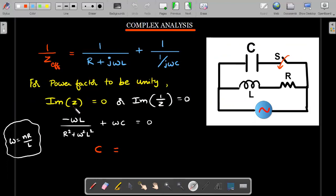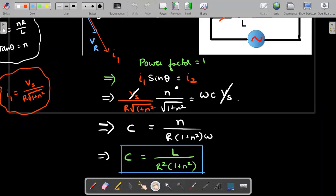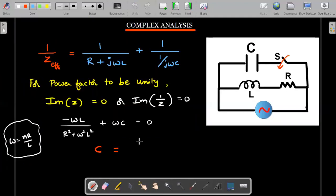For power factor to be unity, you should be knowing that the imaginary value of the impedance should become zero. And if you are good with your complex analysis, imaginary value of one by Z also can be equated to zero. I'll multiply and divide by R minus J Omega L, and then I end up getting R squared plus Omega squared L squared in the denominator. I've summed up the imaginary parts of individual things and equated it to zero. I borrow Omega is NR by L from the first step, and the value of C again comes out to be L divided by R squared into one plus N squared.